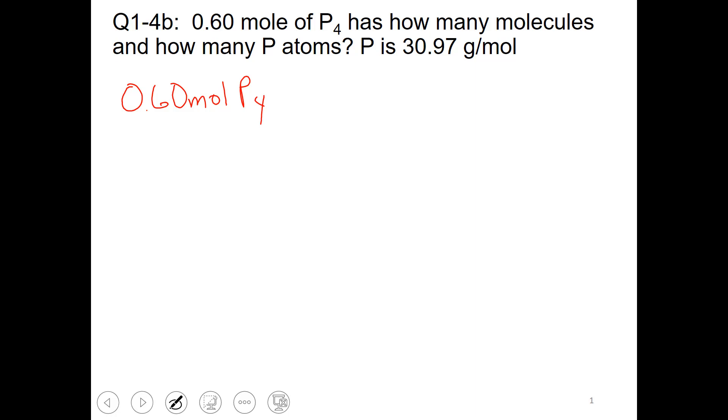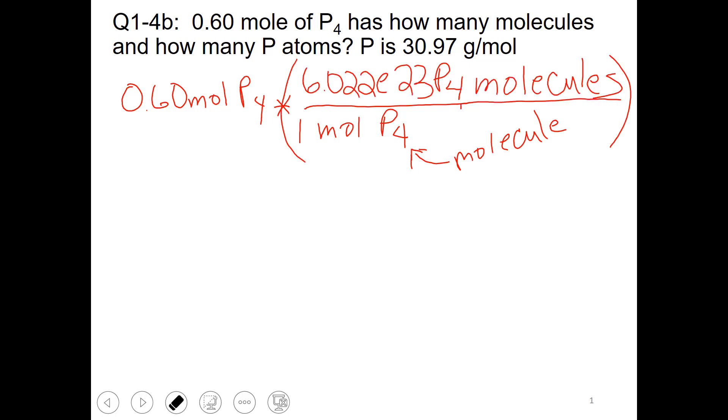Now we need to think about our ratios. Obviously we would like 1 mole of P4 on the bottom. P4 is a molecule. And if we have a mole of something, then we have 6.022 times 10 to the 23rd parts of that something. So if you look at this ratio, this is a true ratio. The only thing I need to do to answer the first question is multiply 0.6 times Avogadro's number. And I wind up with 3.6 times 10 to the 23rd P4 molecules.